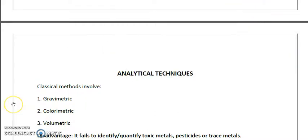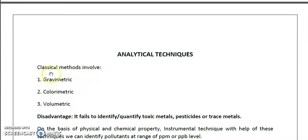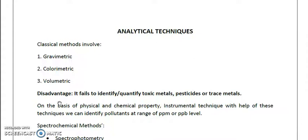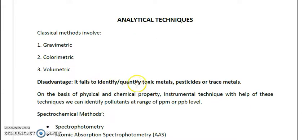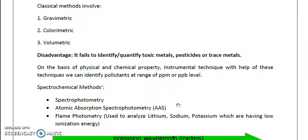Our team from the ASS Science Foundation will be talking about analytical techniques. As mentioned in our literature, there are classical methods: gravimetric, colorimetric, and volumetric methods. These are chemistry-based methods. Their disadvantage is that they fail to identify or quantify toxic metals, pesticides, or trace metals on the basis of physical and chemical properties. Instrumental techniques have been designed to identify pollutants at levels in the range of ppm (milligrams per liter) or ppb (micrograms per liter).